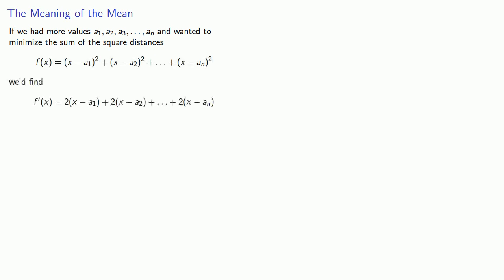Let's generalize this. If we had more values a₁ through aₙ and wanted to minimize the sum of the squared distances, we'd find our derivative as before, and the algebra would tell us that a critical point occurs at the mean. We'd be able to do the same analysis and find that this corresponds to a local minimum value.